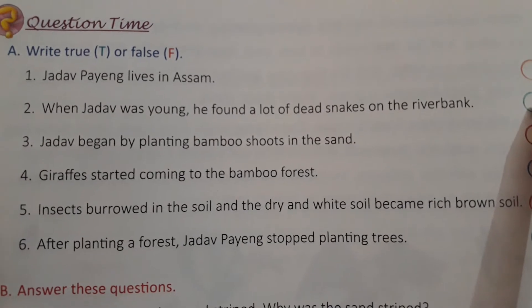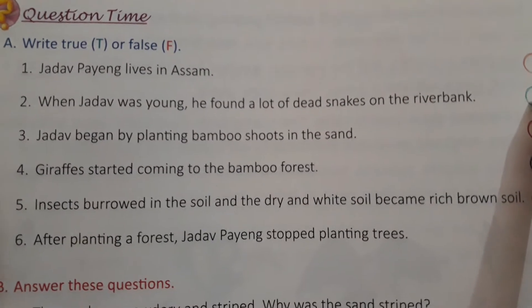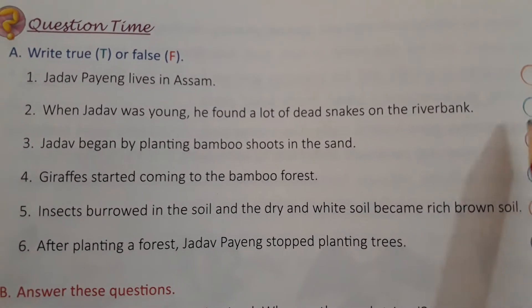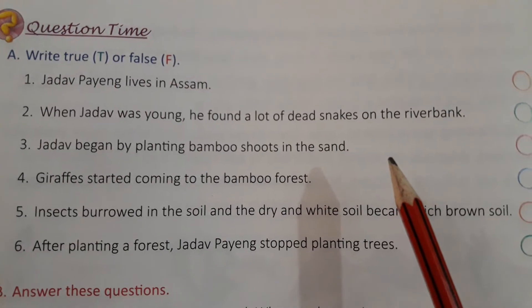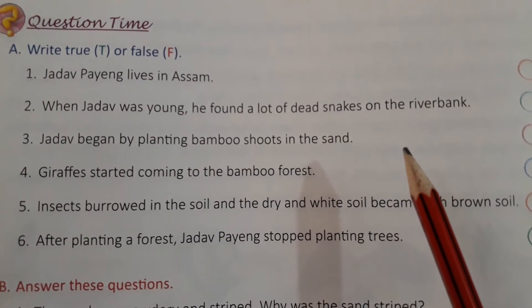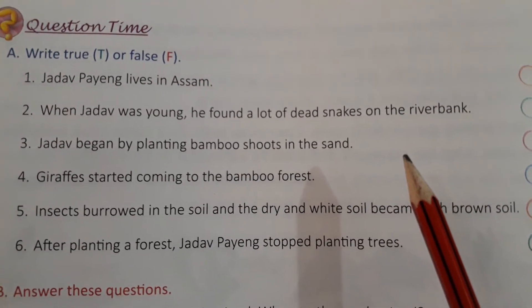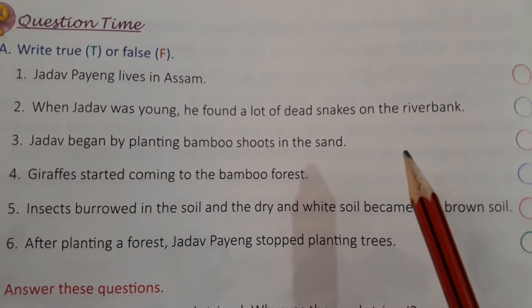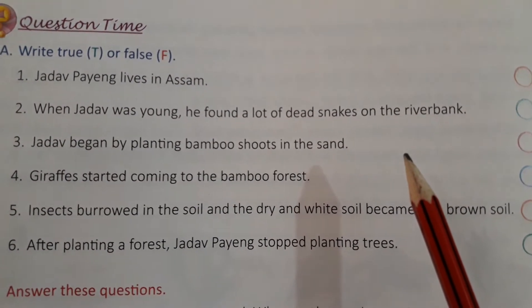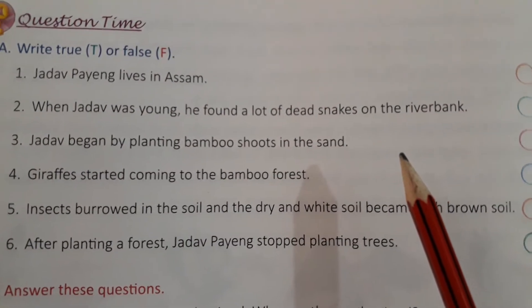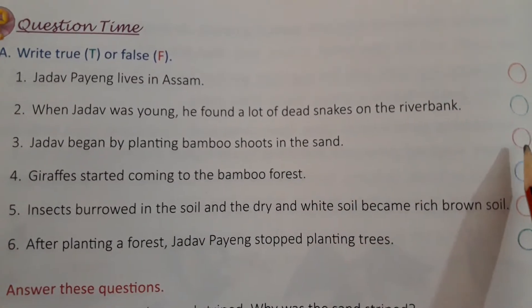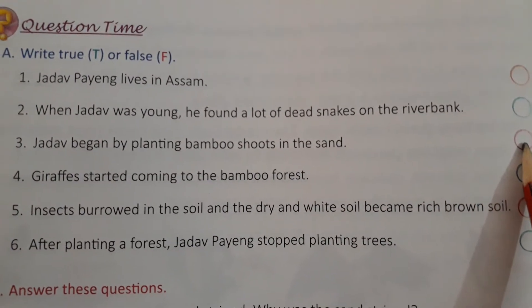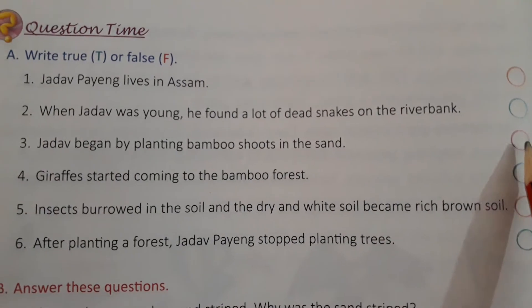Third sentence: Jadav began by planting bamboo shoots in the sand. तो Jadav जी ने पौधे लगाना bamboo shoots से चालू किया था, रेती में. तो यहाँ पर होगा True — T लिखेंगे.